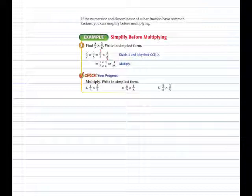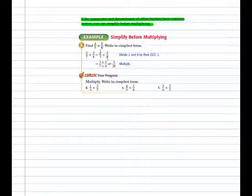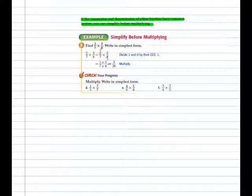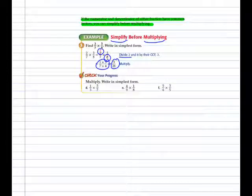If the numerator and denominator of either fraction have common factors, you can simplify before you multiply. Simplify before you multiply — a key concept, a struggle for lots of kids, but really important. For example, two times three over seven times eight: the two and the eight have a common factor of two, so instead of two-sevenths times three-eighths, we have one-seventh times three-fourths. When we multiply and get three-twenty-eighths, we know that fraction is already in simplest form because we simplified before multiplying.